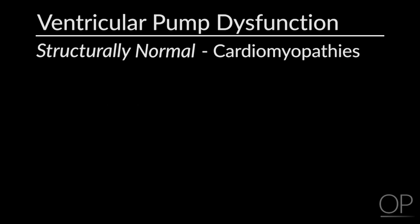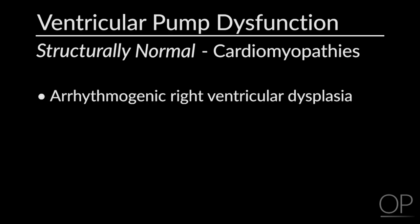Lastly, arrhythmogenic right ventricular dysplasia is a type of cardiomyopathy that most often affects the right ventricle with a pronounced ventricular arrhythmia of the right ventricle.